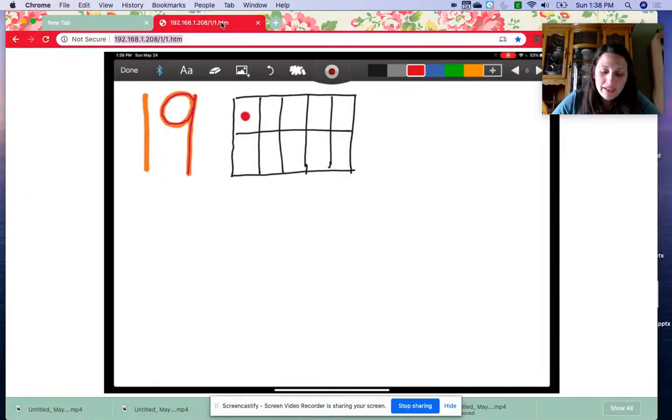One, two, three, four, five, six, seven, eight, nine, ten. Not done yet. Eleven, twelve, thirteen, fourteen, fifteen, sixteen, seventeen, eighteen, nineteen. Now I have 19 counters.